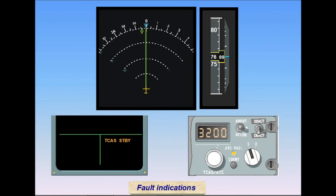A TCAS fault is indicated by a red flag message on the ND and PFD displays, an ATC fail light on the control head, and an ECAM message.